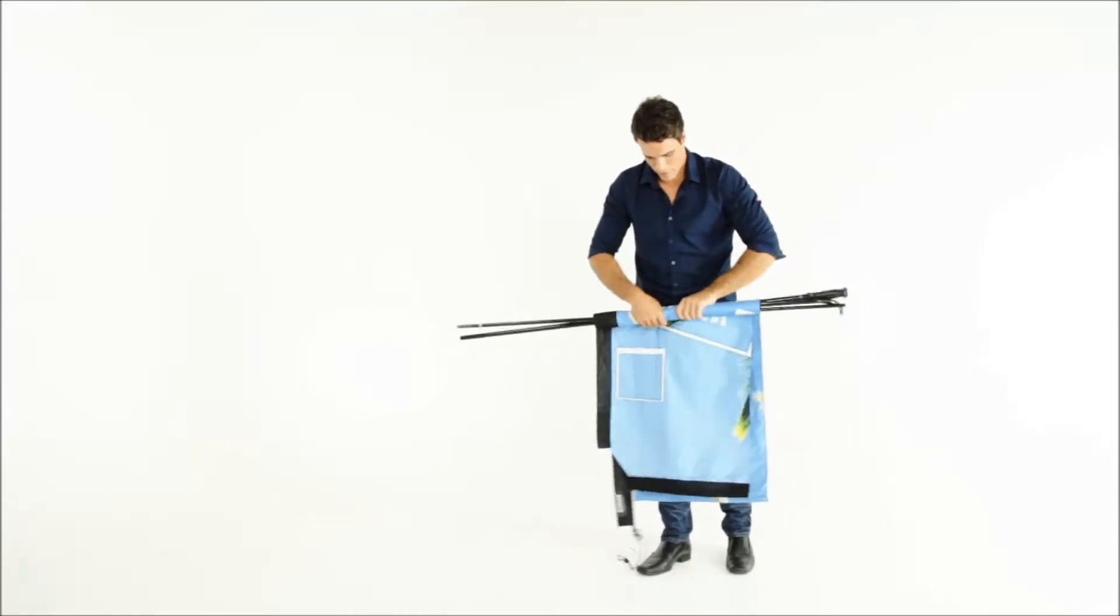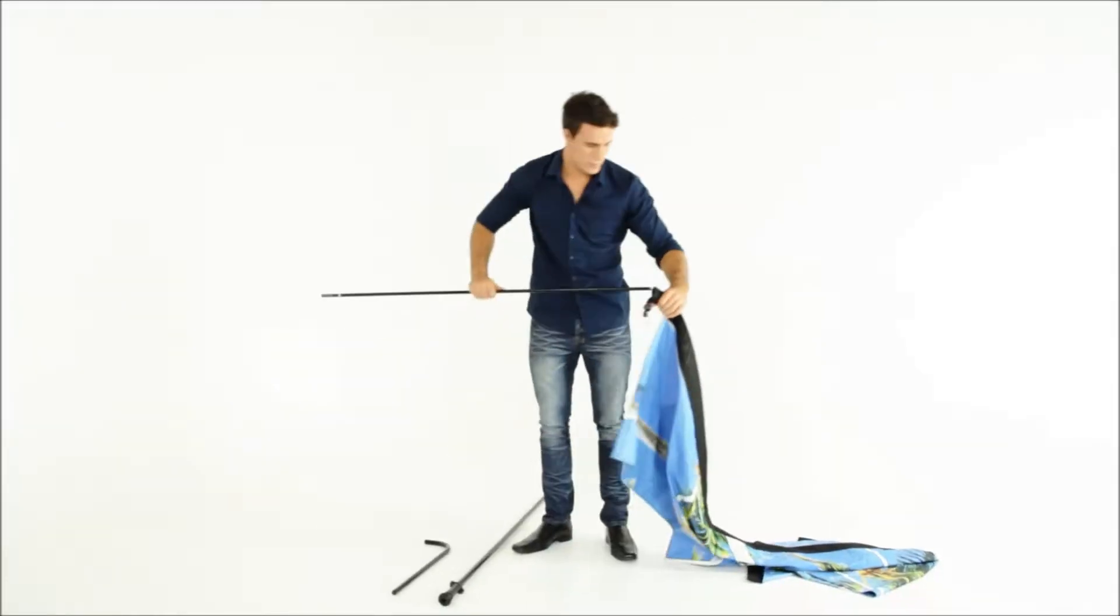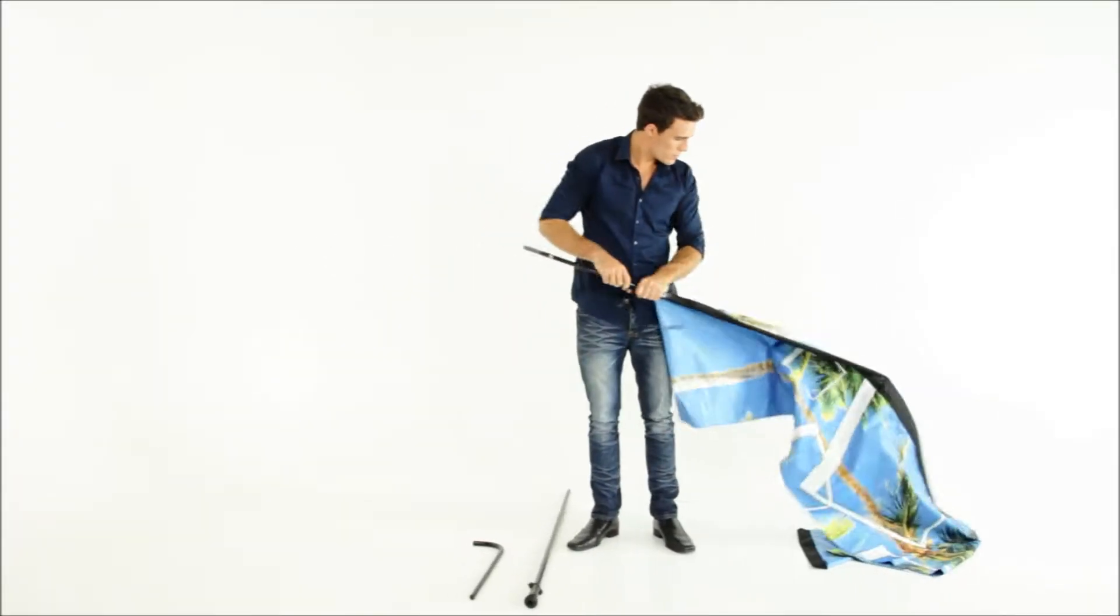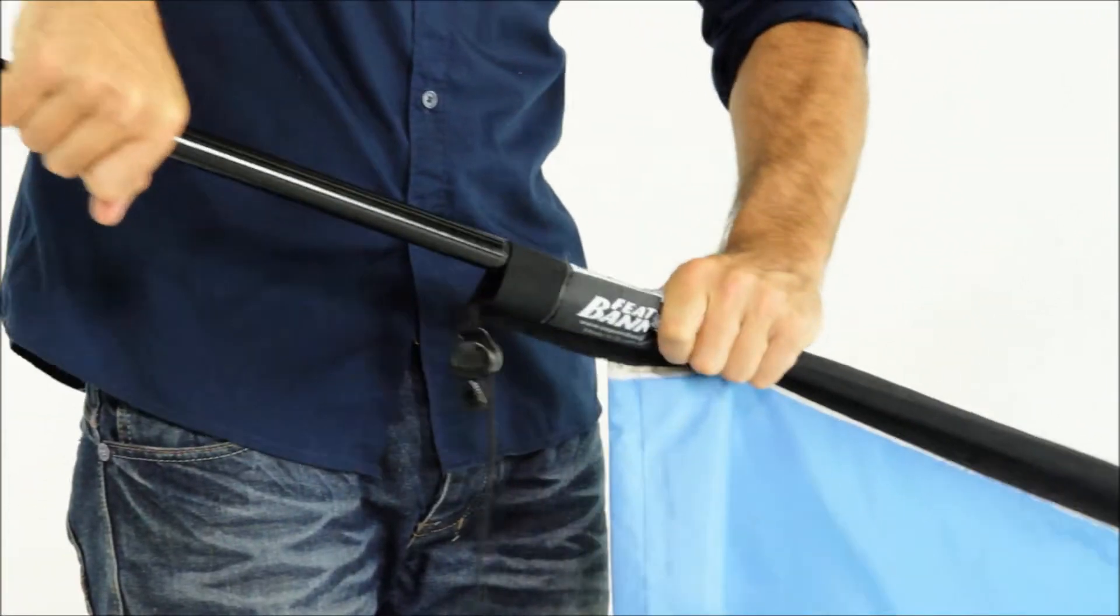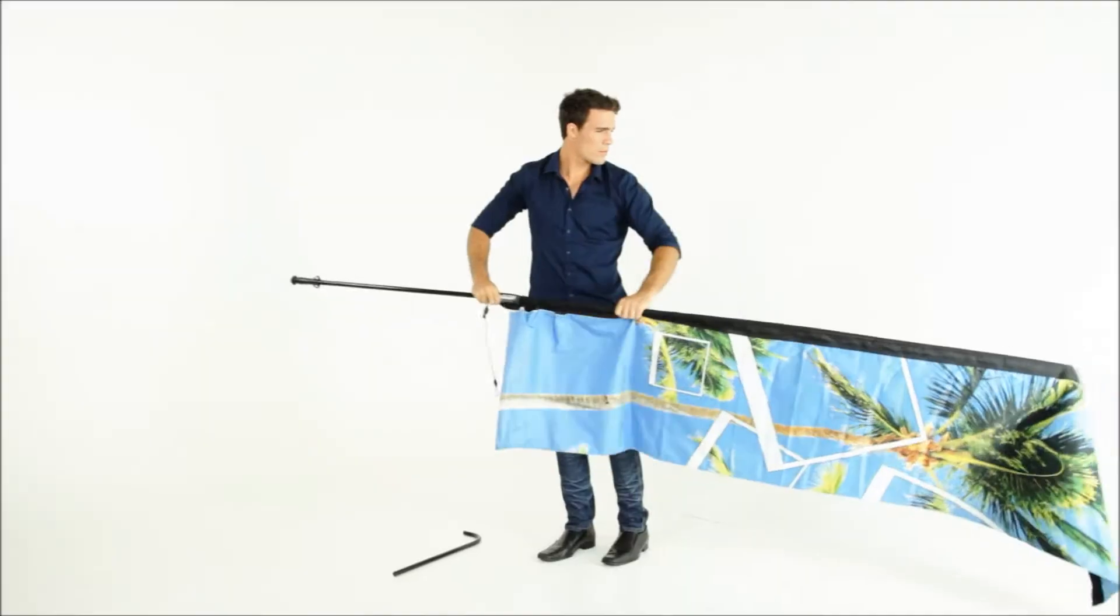Unfold the fabric. Insert the first rod into the sleeve on the banner. Join the next rod making sure it fits flush together and push into the sleeve.